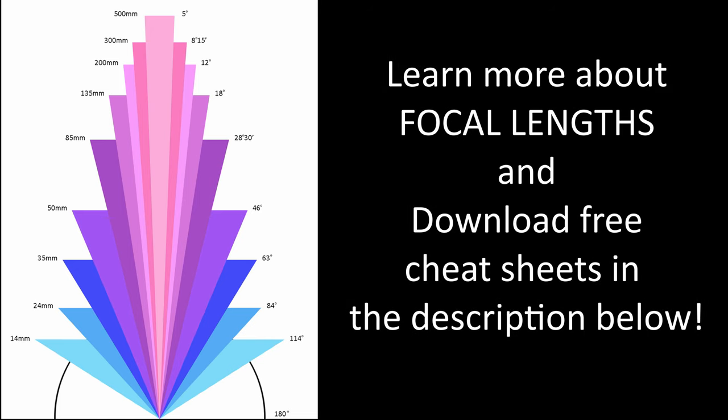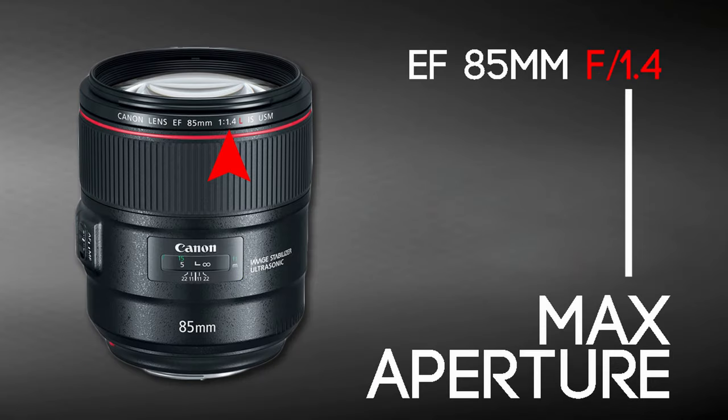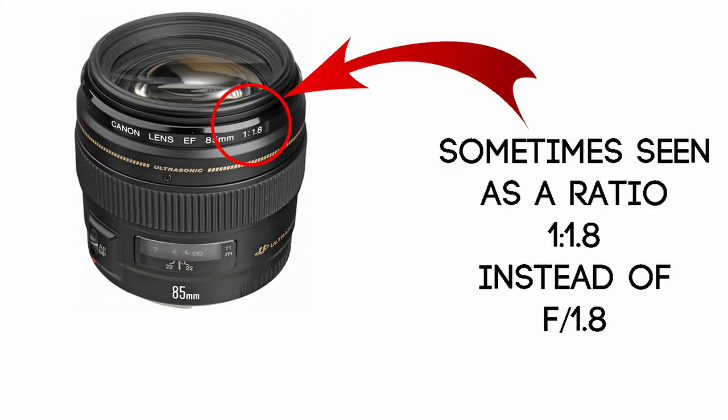There are also links to a few free cheat sheets you can download. The next set of letters and numbers is typically the aperture, or aperture range, indicated by the letter F and then some numbers, such as F/1.8. Sometimes the F and the slash are not included, and you will see a series of numbers in a ratio like 1:1.8 instead.